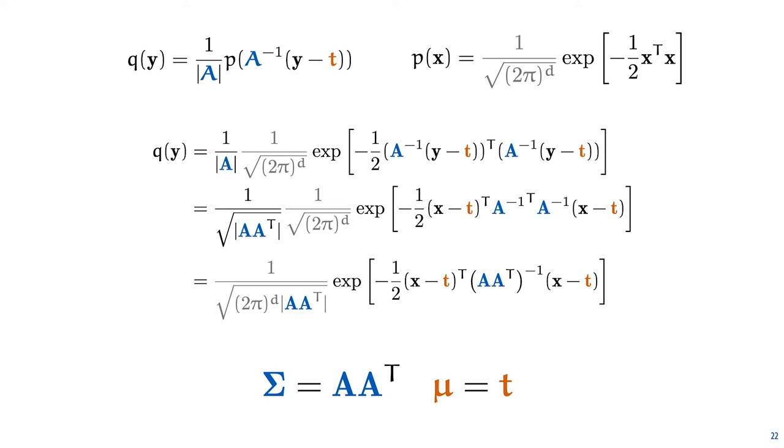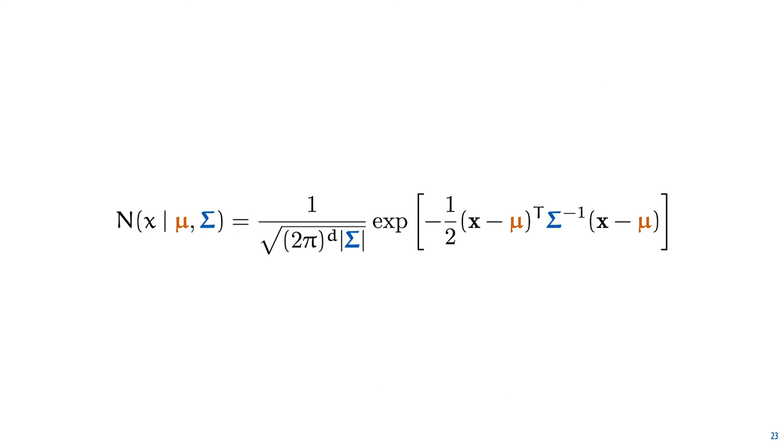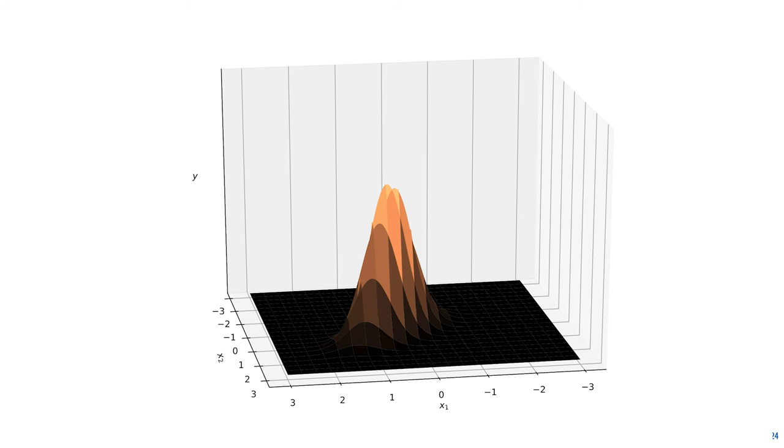This value, A times A transpose, we call the covariance matrix, and the translation vector t becomes the mean of our new distribution, mu. And with that, we have the final functional form of the multivariate normal distribution in terms of the mean and the covariance matrix. Which when we plot it as a surface over two dimensions, looks like this.